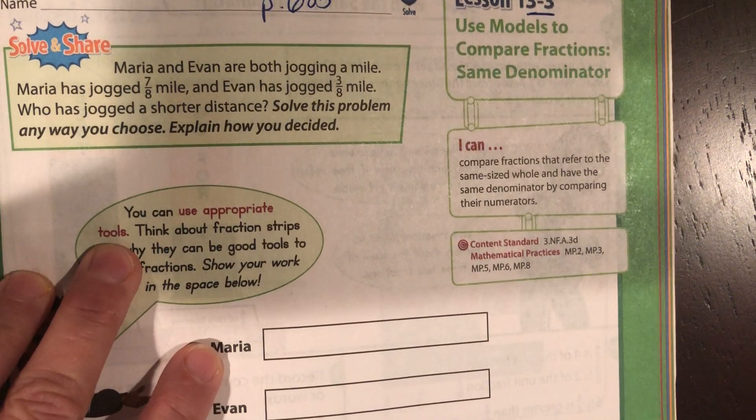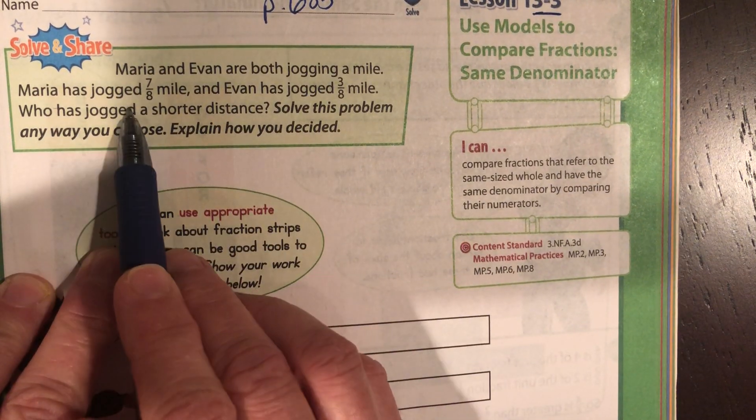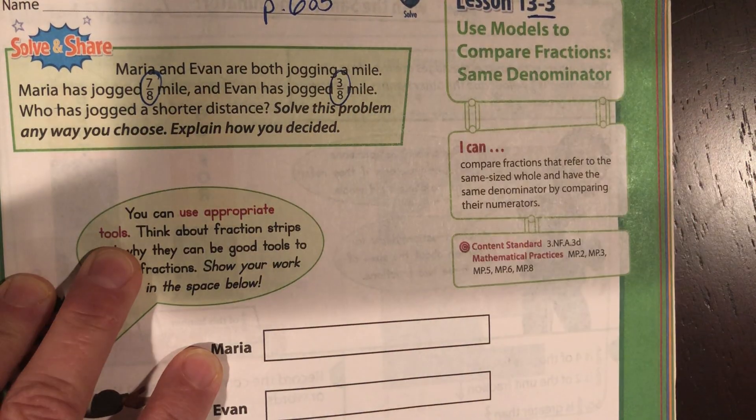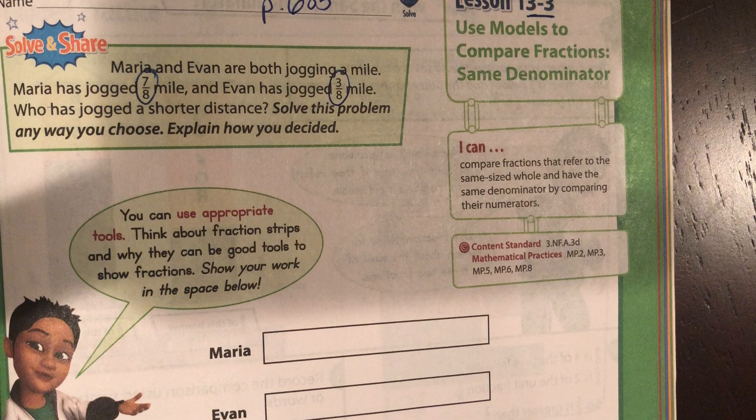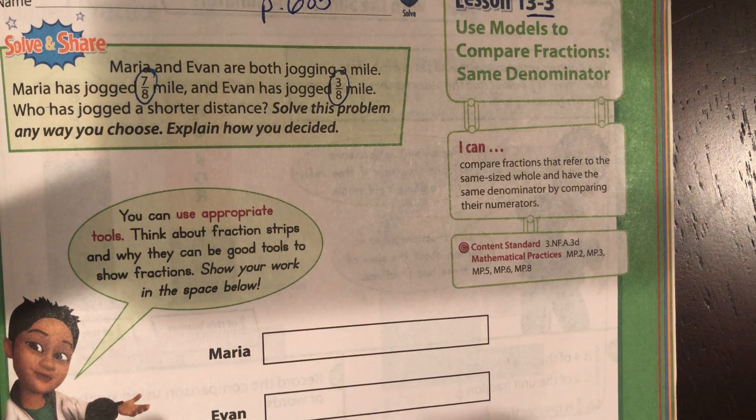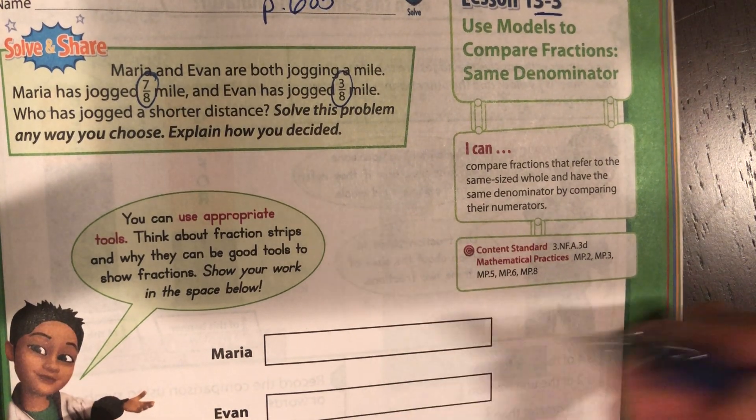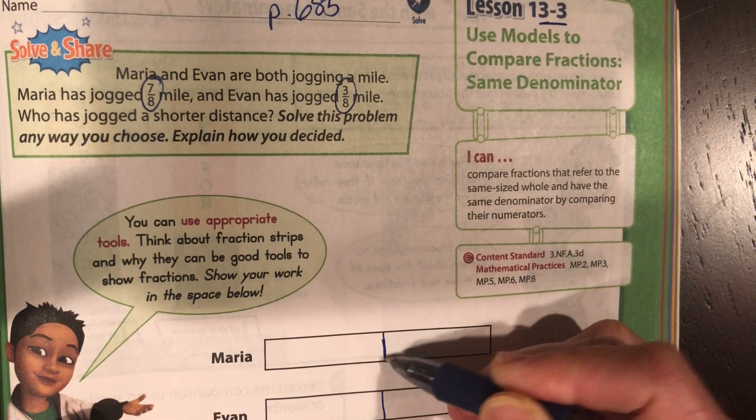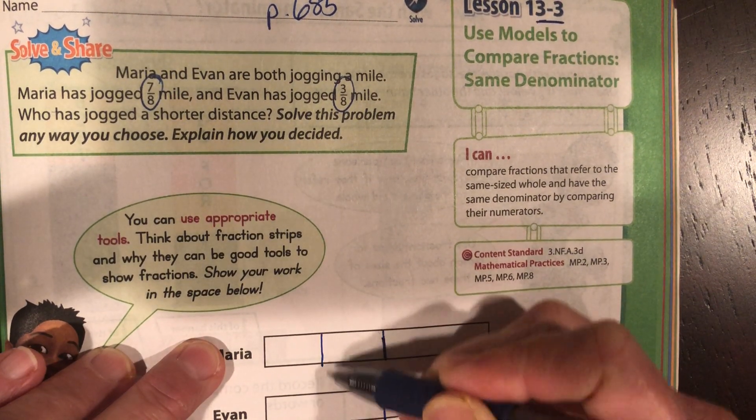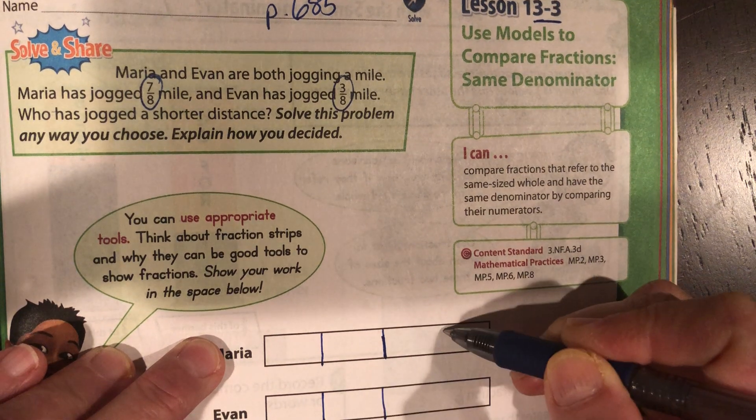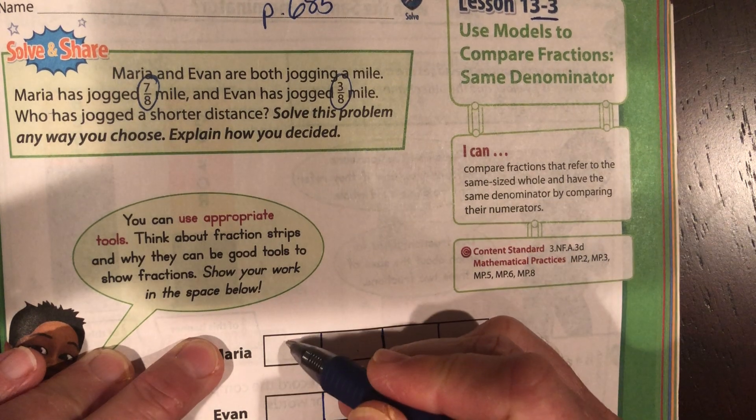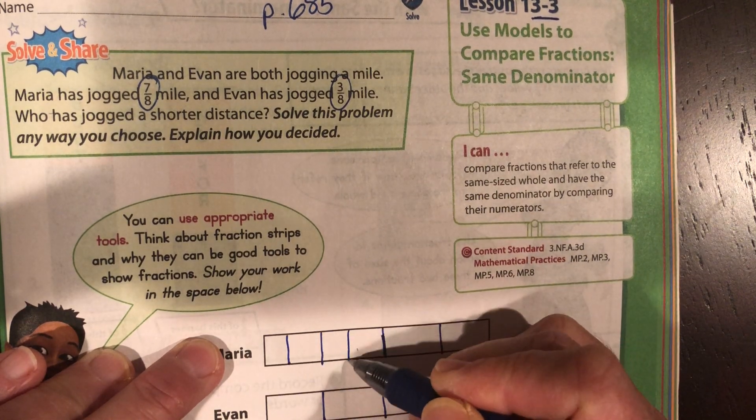Maria and Evan are both jogging a mile. Maria has jogged seven-eighths of a mile and Evan has jogged three-eighths of a mile. Who has jogged a shorter distance? So we're going to divide this into eighths. You divide it into half, then divide each side into half, then divide each section in half, which will double our sections and give us eight.